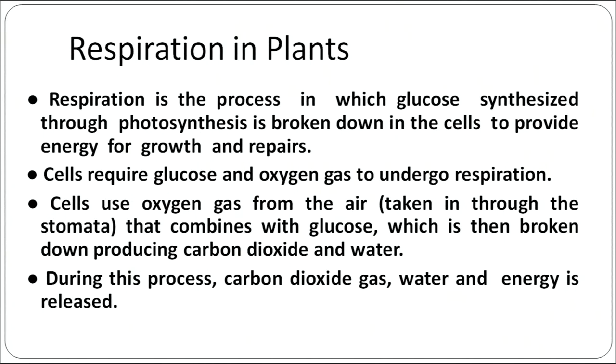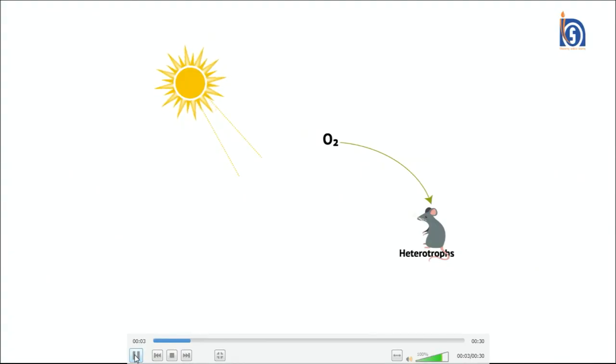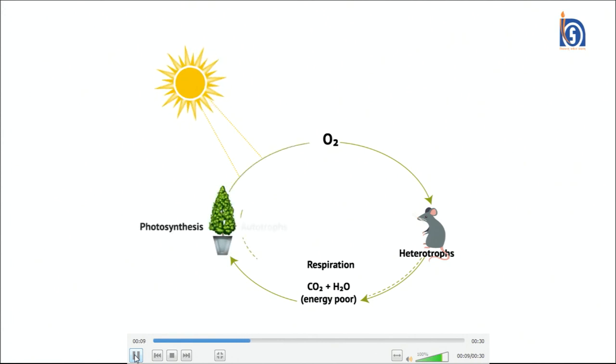Respiration requires glucose and oxygen as raw materials. Cells obtain oxygen from the atmosphere, which enters the plant through stomata present mainly on the green parts — leaves — and also on many other young parts of the stem. This oxygen combines with glucose, which is broken down into carbon dioxide and water, releasing carbon dioxide gas, water, and energy. I shall now show you a clip depicting how the sun's energy is trapped by autotrophs — green plants — and through photosynthesis synthesizes glucose, an energy-rich molecule.